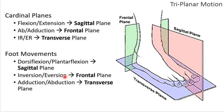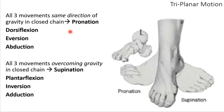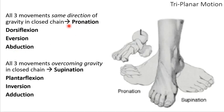Just a little change: we're going to use dorsiflexion, plantarflexion, inversion, eversion, and adduction and abduction when we try to isolate particular movements. But in real life, you're not going to isolate dorsiflexion, eversion, and abduction separately. What's going to happen is you're going to get a combination of all three movements. When your body is collapsing with gravity — being a mobile adapter — your body is not just dorsiflexing. This is similar to when we introduced scapular movements: you're not really getting just elevation or upward rotation, but a combination.